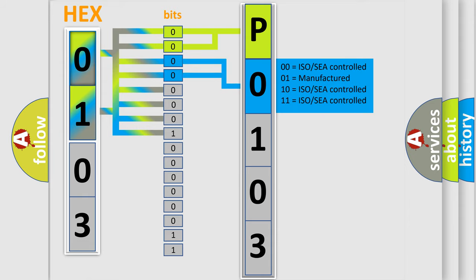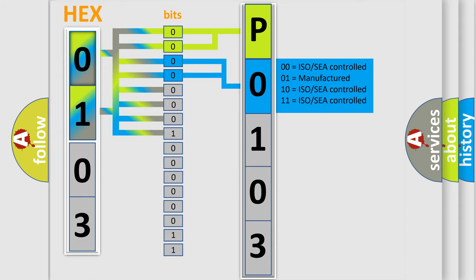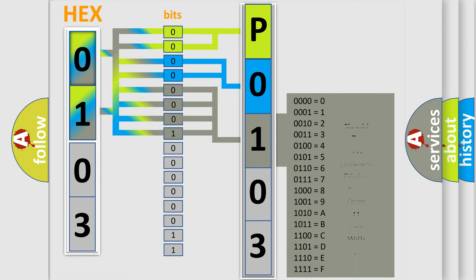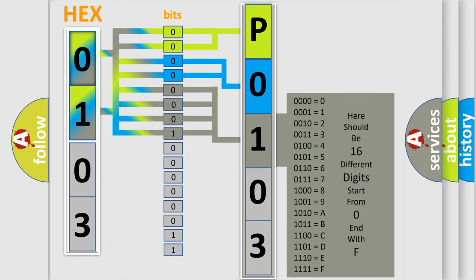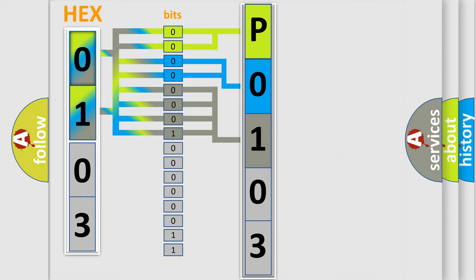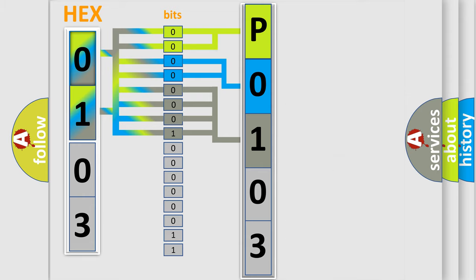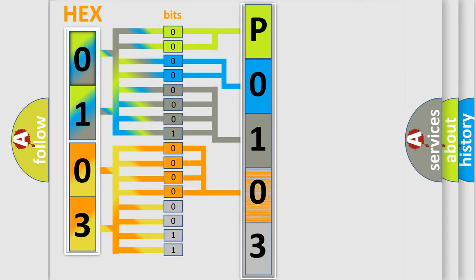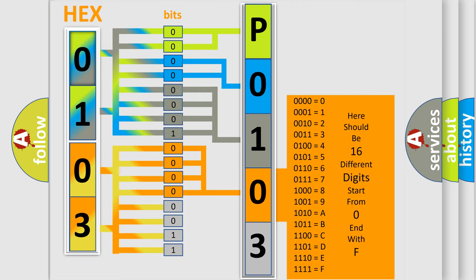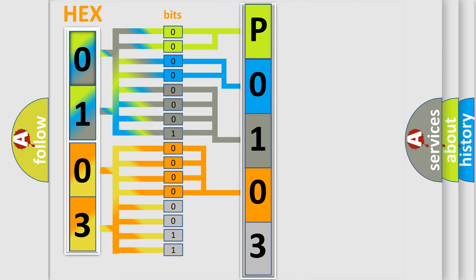The last bits of the first byte define the third character of the code. The second byte is composed of a combination of eight bits. The first four bits determine the fourth character of the code, and the combination of the last four bits defines the fifth character. A single byte conceals 256 possible combinations.